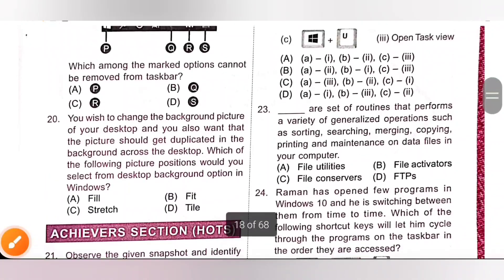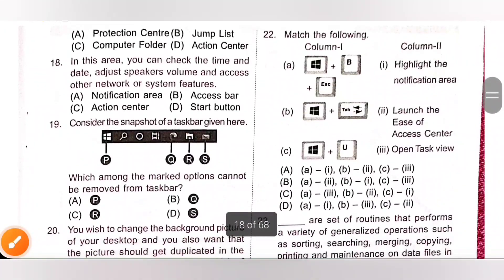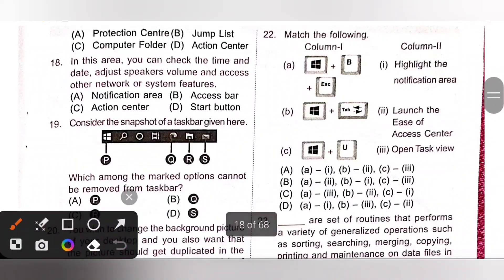Next, 22. Match the following. Please pause the video and check A, B and C. We already know Windows plus tab opens task view, so B3. Option D is the correct answer. A1, Windows plus B plus escape highlights the notification area. Windows plus U launches the ease of access center. So, option D is the correct answer.